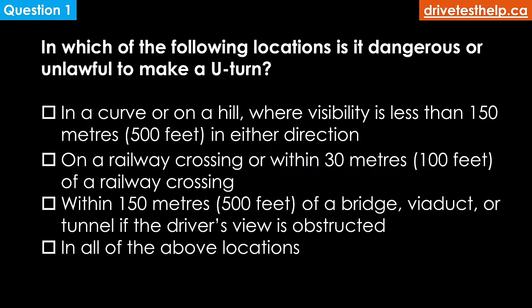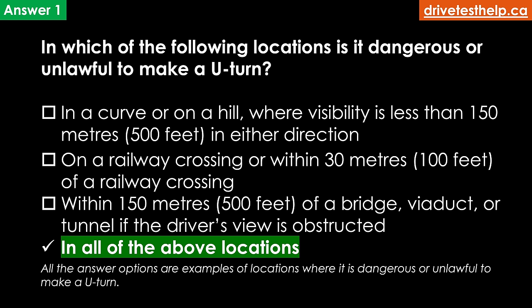In which of the following locations is it dangerous or unlawful to make a U-turn? In a curve or on a hill where visibility is less than 150 meters or 500 feet in either direction; on a railway crossing or within 30 meters of a railway crossing; within 150 meters of a bridge, viaduct or tunnel if the driver's view is obstructed. The answer is in all of the above locations.